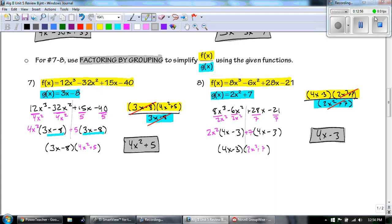So 4x minus 3, 2x squared plus 7. And then our 2x squared plus 7s cancel out. And we are left with 4x minus 3 as our final answer.